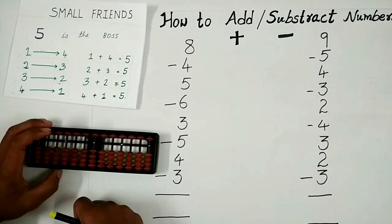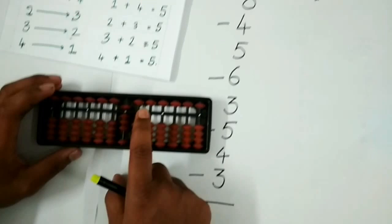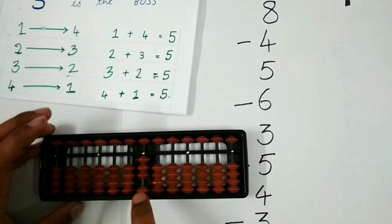We see that we have 8 at the top. Let's place 8 on the abacus. To subtract 4, let us check do we have enough bits at the lower end or not. We see that we have only 3 bits at the lower end. So to subtract 4 we need to use the friend's concept. The friend of 4 is 1. So remove 5 and add 4's friend, that is 1.